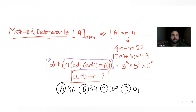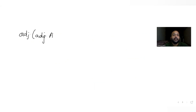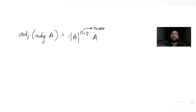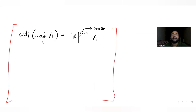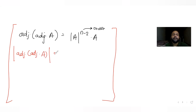Before solving, let's recall the key identity: det(adj(adj(A))) = det(A)^(n²−2n+1), where n is the order of the matrix. In our question the order is denoted m, so we'll replace n with m. Let's generalize this idea first and then apply it to our specific question.